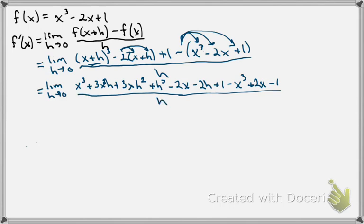Now we're going to have some fun and there's going to be some canceling. I see a plus 1 and a minus 1. I see a plus x cubed and a minus x cubed. I see a minus 2x and a plus 2x. And that looks to be all we can cancel, but that's okay.